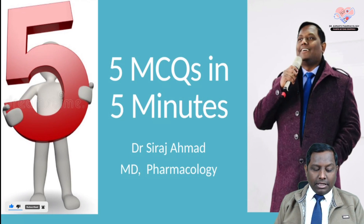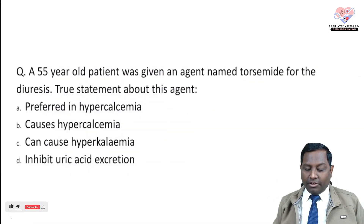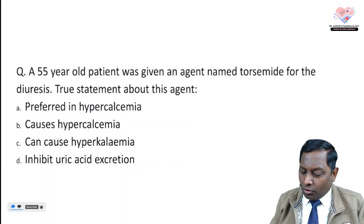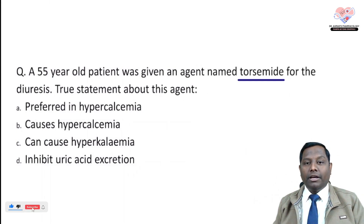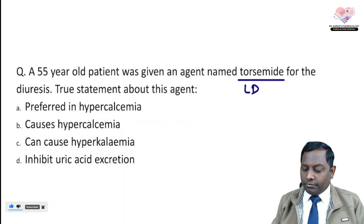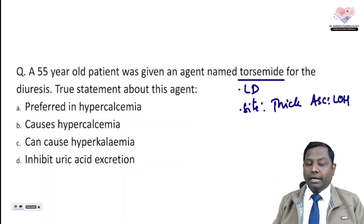Let's see what we have in today's session. The very first question is about a 55-year-old man who was given an agent named torsemide. Remember, torsemide is from the family of loop diuretics, same as furosemide. The site of action of loop diuretics is mainly the thick ascending limb of the loop of Henle.